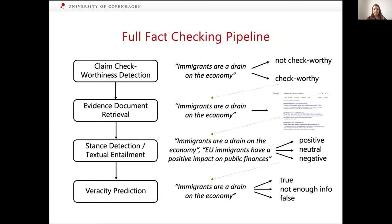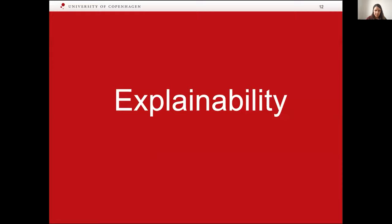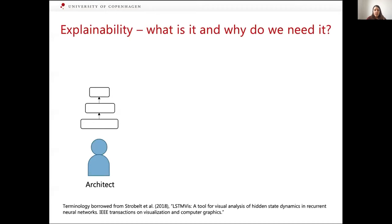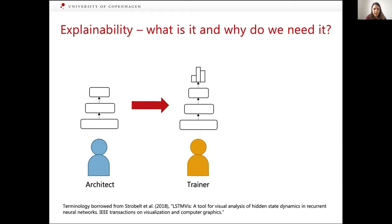So why do we need explainability in this context? This task is very complicated, so it's important to understand why a prediction is made. When a machine learning model is developed for automatic fact-checking, typically there is an architect who develops a neural network architecture defining how one arrives at the output given the input. This is then passed to a trainer — a person who takes that model definition and feeds some data into it to learn how to make predictions for a specific domain.